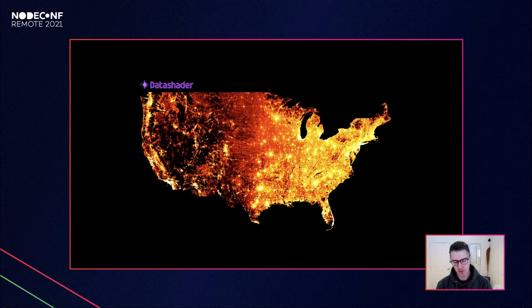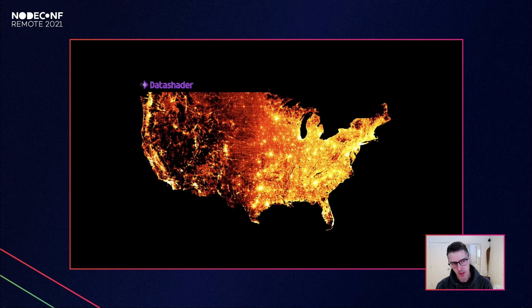On the viz team, one project we work on is Datashader — another Python tool that can render and visualize around 300 million points in under a few seconds at interactive speeds. It's really good for analytic visualizations where you can zoom in, zoom out, do exploratory analysis, and interact with your data in real time without pre-aggregation, tiling, or setting up databases. You just load your CSV and go.